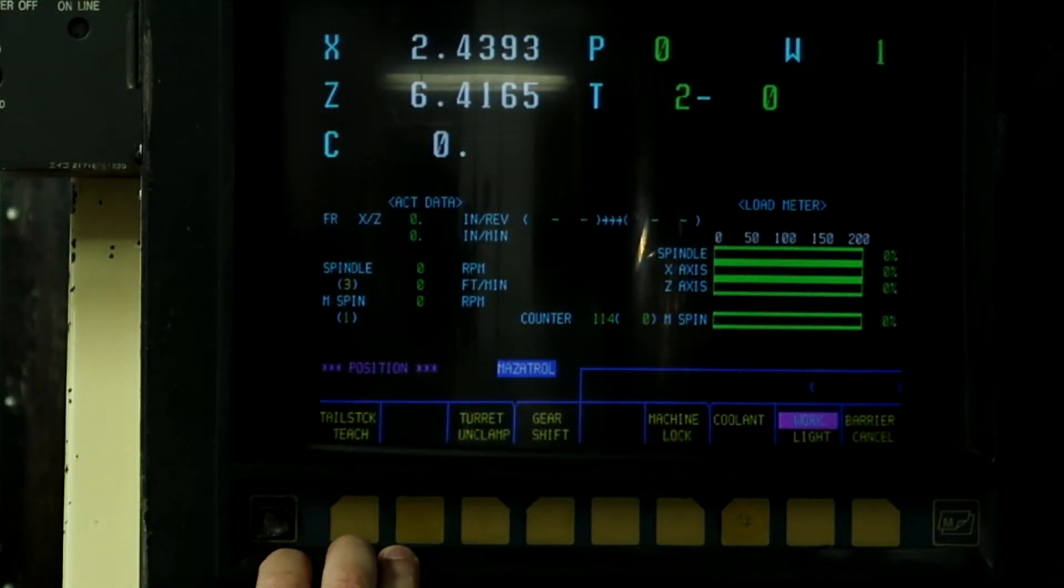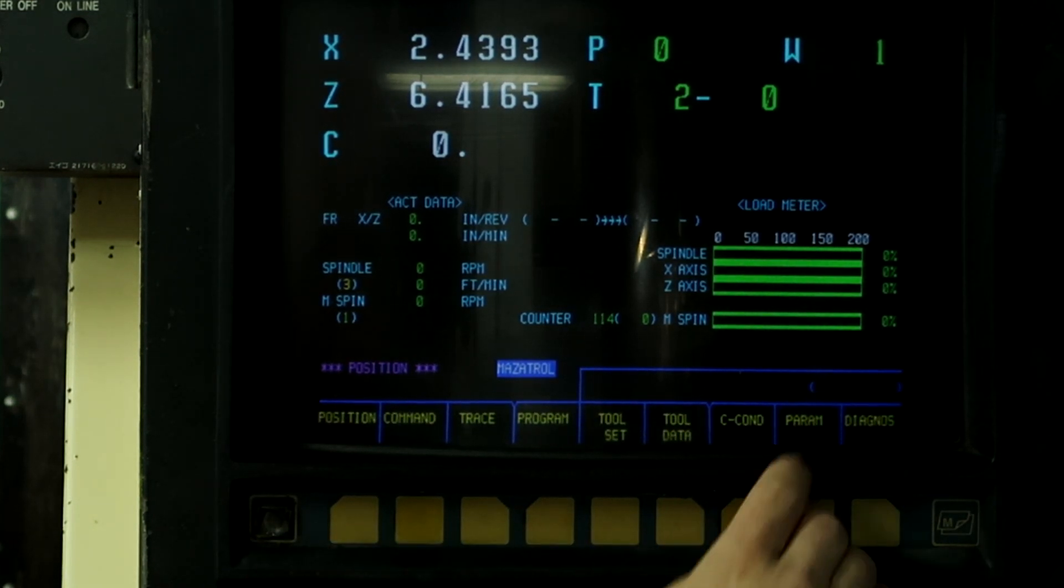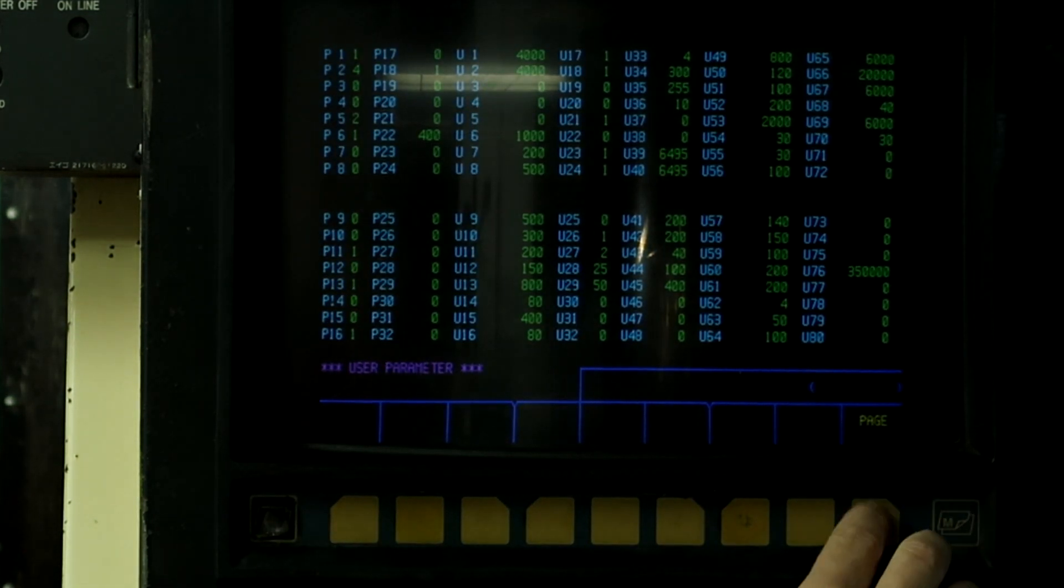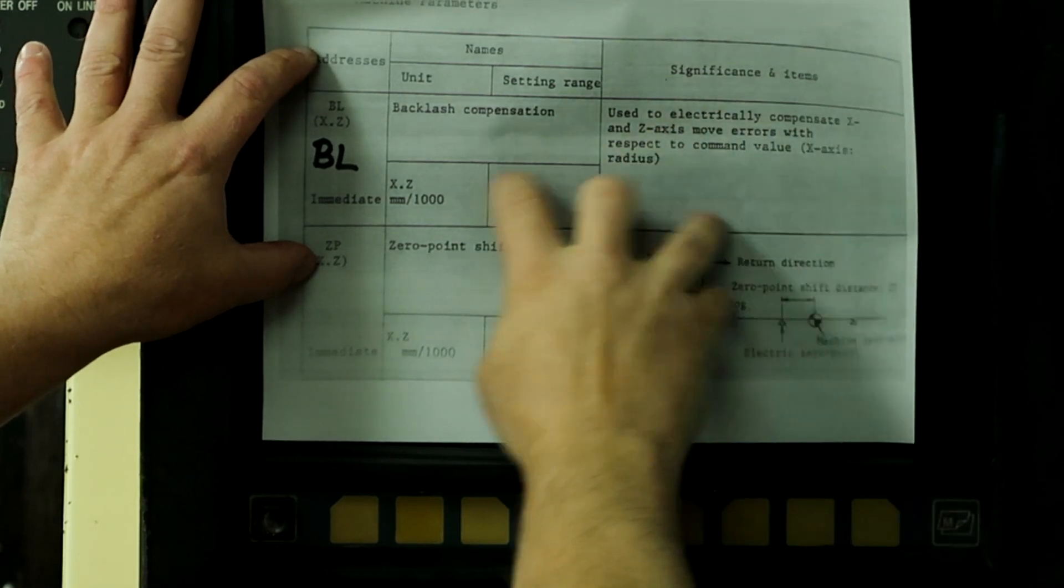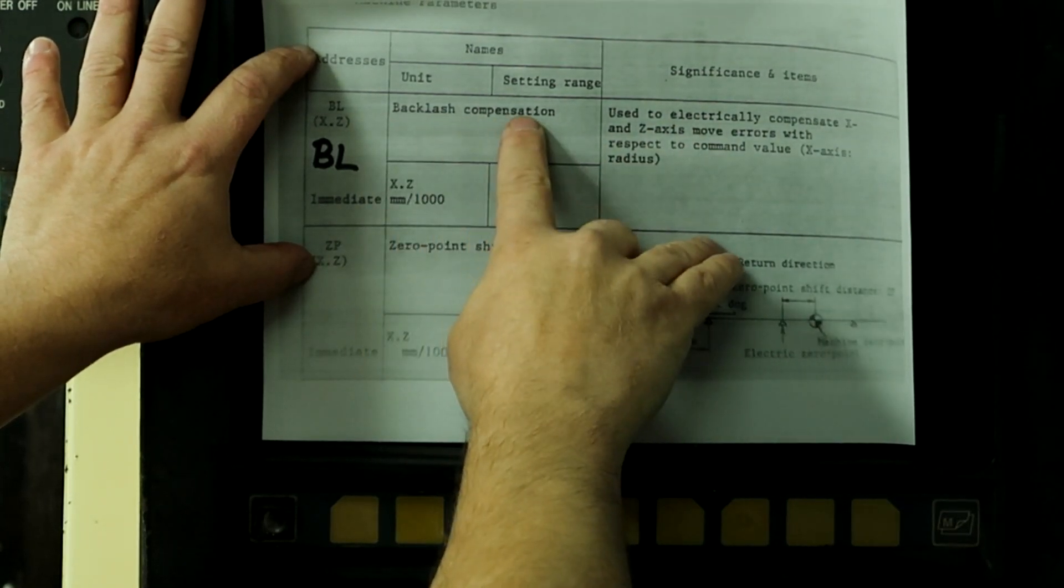Alright guys, over here at the parameter page on page 2 is the backlash parameters. It's BL, and BL stands for Backlash Compensation.